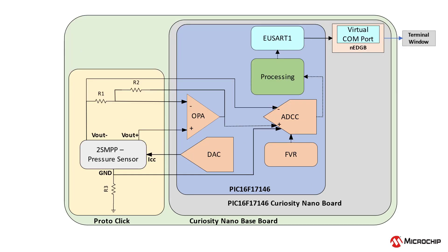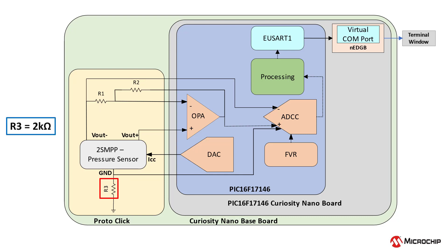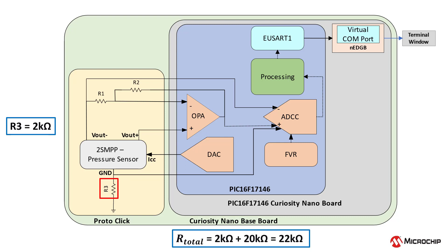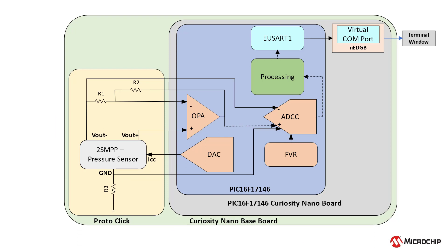First, let's discuss the ProtoClick on the Curiosity Nano base. The ProtoClick is populated with three resistors — R1, R2, and R3 — which are boxed in red on the screen. The resistor R3 is a 2K ohm shunt resistor which measures the circuit's current. There is an internal 20K bridge resistance inside the pressure sensor, which means the total resistance — the shunt resistor plus the internal bridge resistance — equates to 22K. Now let's examine R1 and R2.